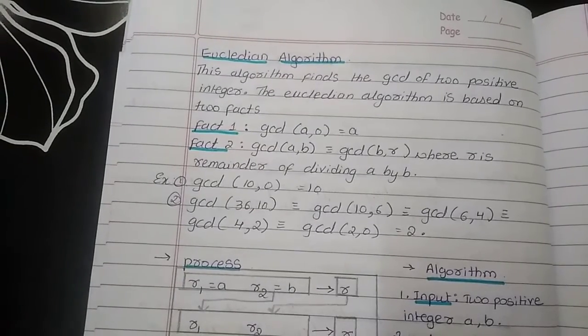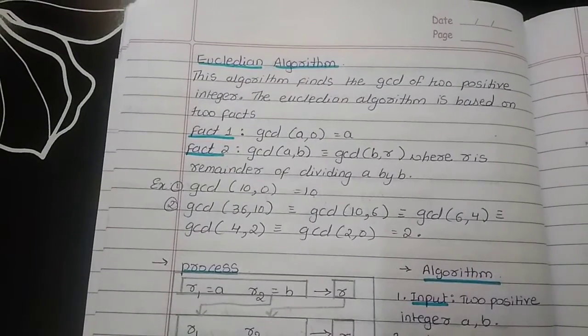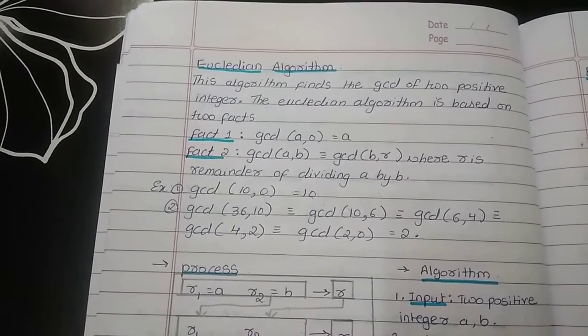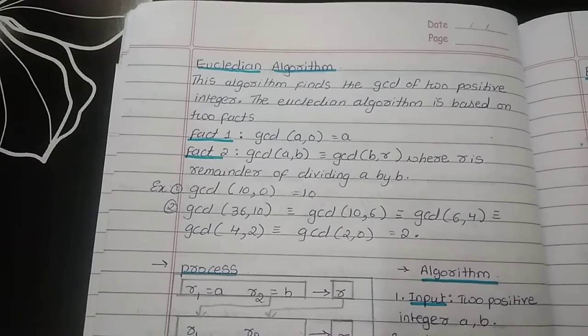Hello everyone, now we will see the concept of Euclidean algorithm. This algorithm is used to find the GCD of 2 positive integers and it is based on 2 facts.